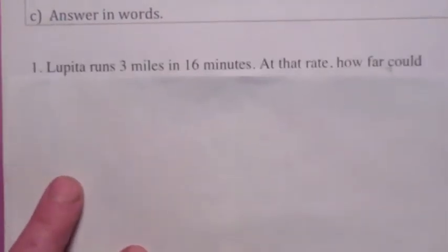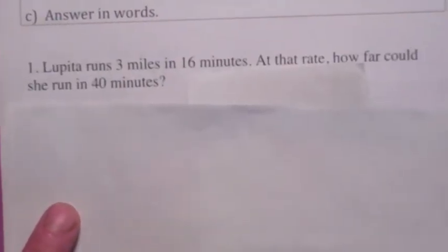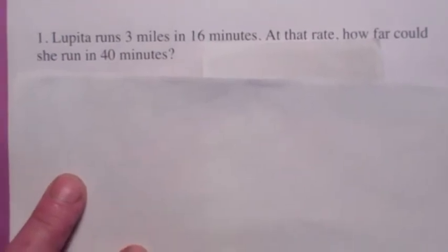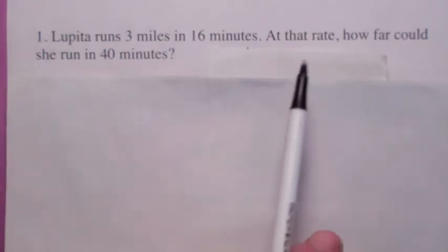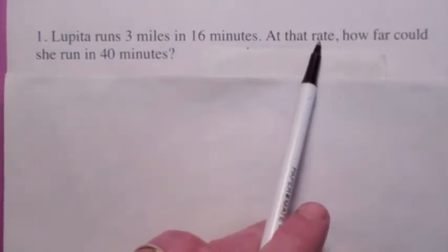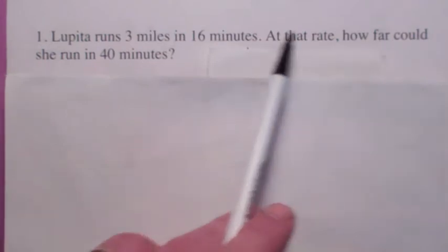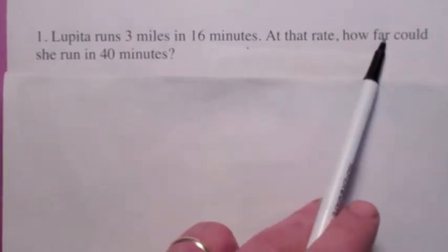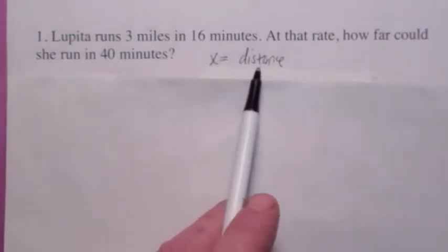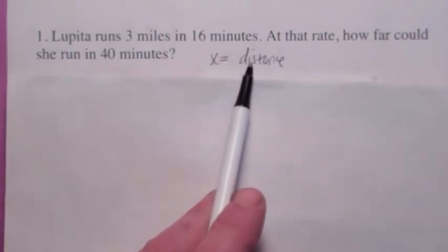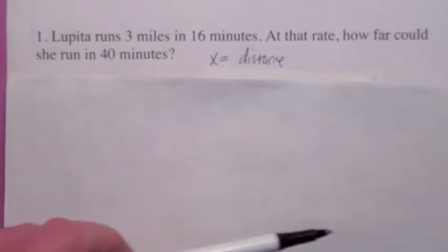Let's look at this first example. Lupita runs 3 miles in 16 minutes. The question is, if she kept the same rate, how far could she run in 40 minutes? So they're asking you how far, the distance, they're asking you for the number of miles, right? So the unknown is the distance. We're going to set up the ratios, two ratios are equal, so that the distance is on the top.